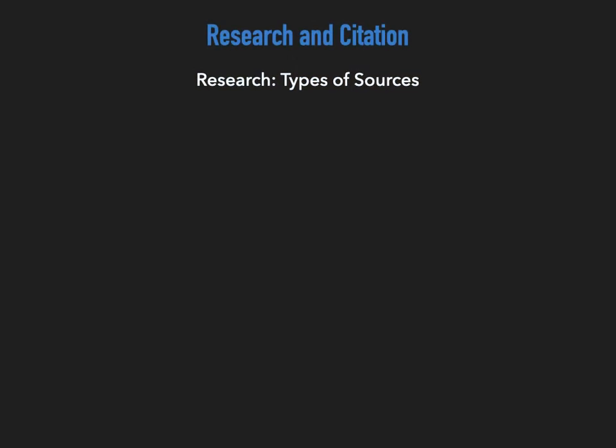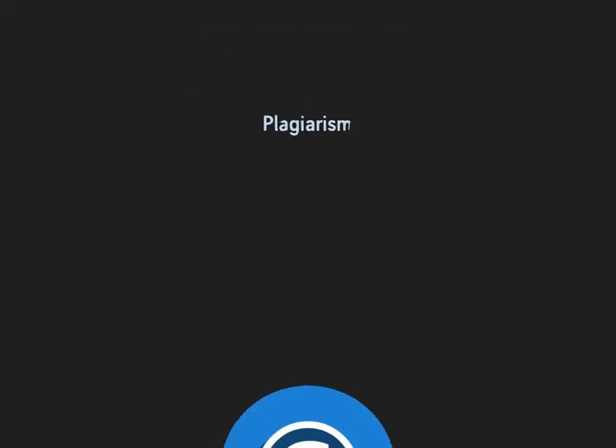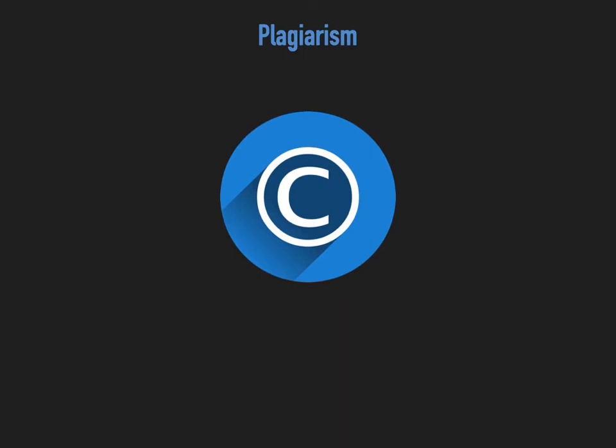Now that we have discussed types of sources, we will move on to a discussion of plagiarism and citation. One of the most important aspects of writing is distinguishing our personal words and ideas from those of other sources, such as journal articles, newspapers, magazines, and other reliable sources. Failure to clearly distinguish and give credit to the words or ideas of another individual is called plagiarism and can result in severe penalties not only in an academic setting but also in a job.